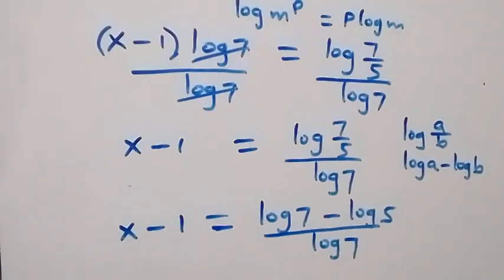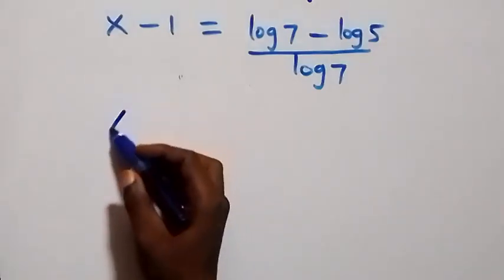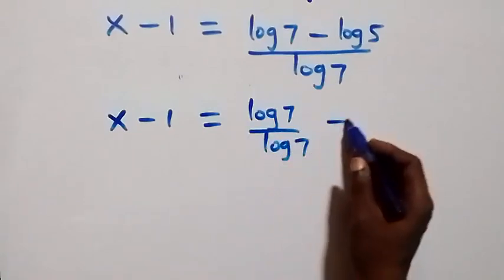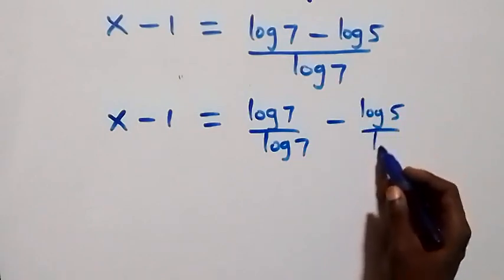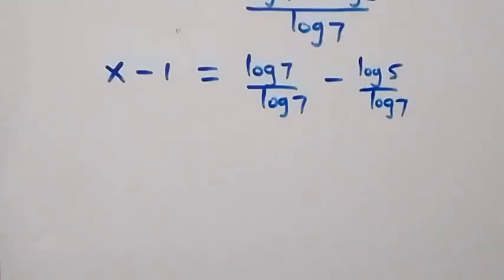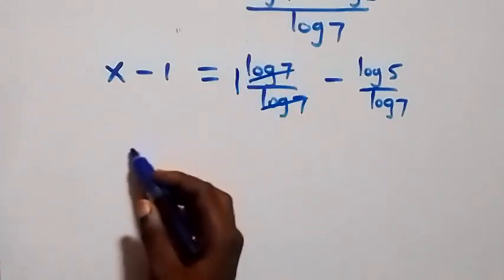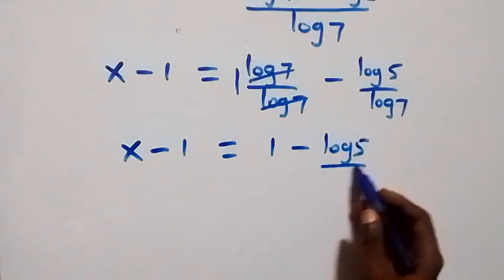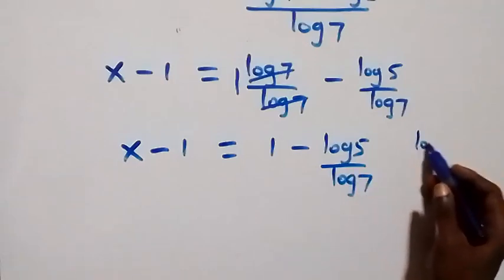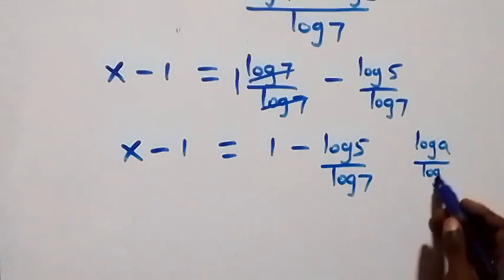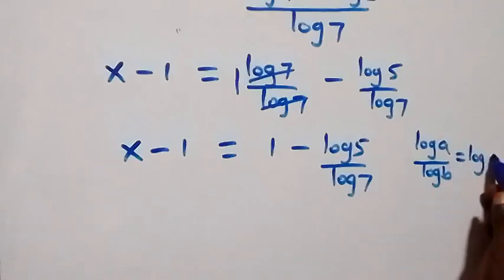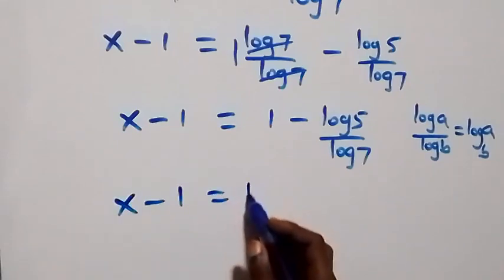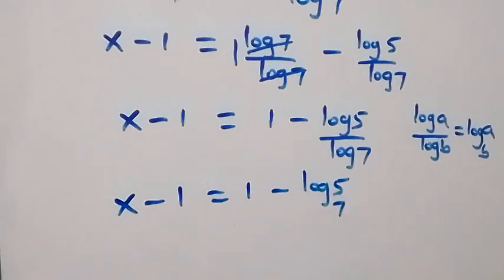Solving forward, we separate the fraction: x minus one equals to log seven over log seven, minus log five over log seven. Log seven over log seven cancels to give one, so x minus one equals to one minus log five over log seven. From the change of base rule, log a over log b is the same as log a to base b. So we write x minus one equals to one minus log five to base seven.